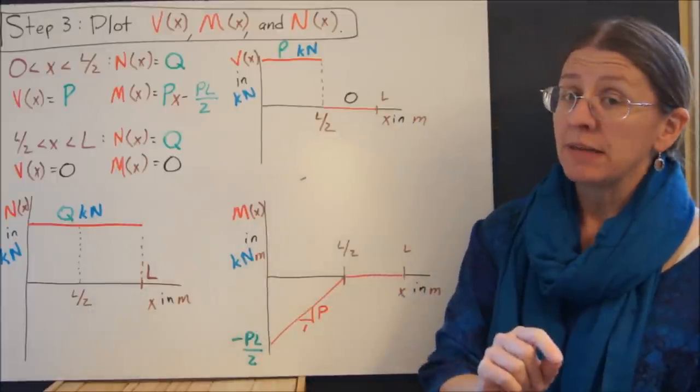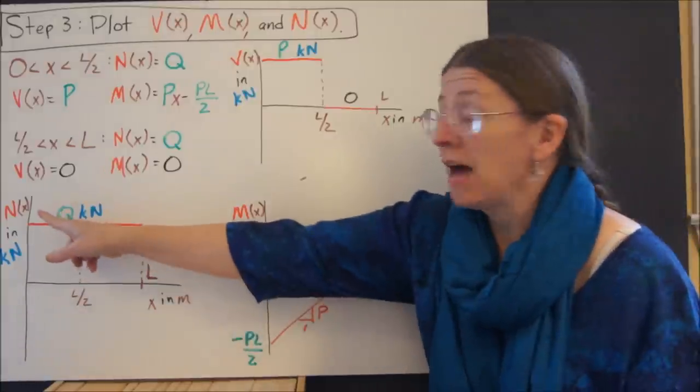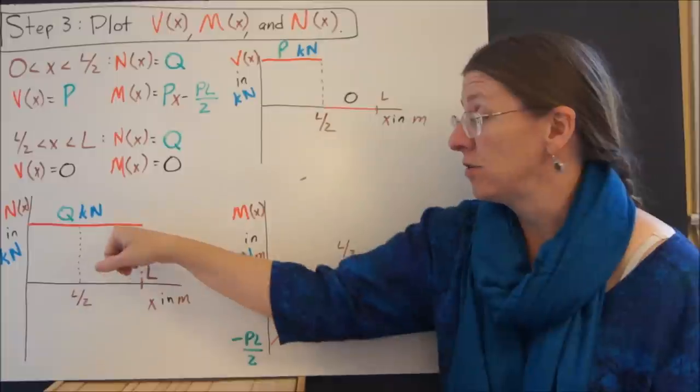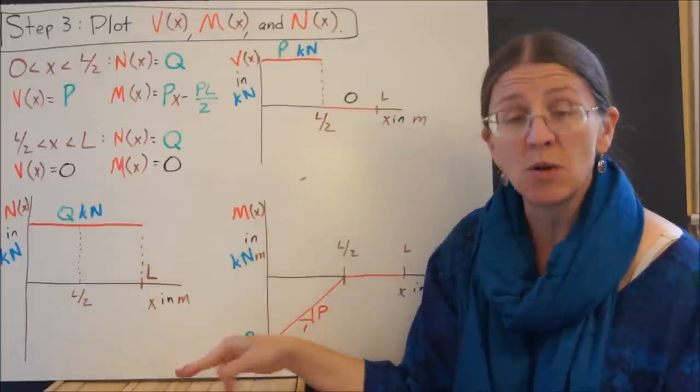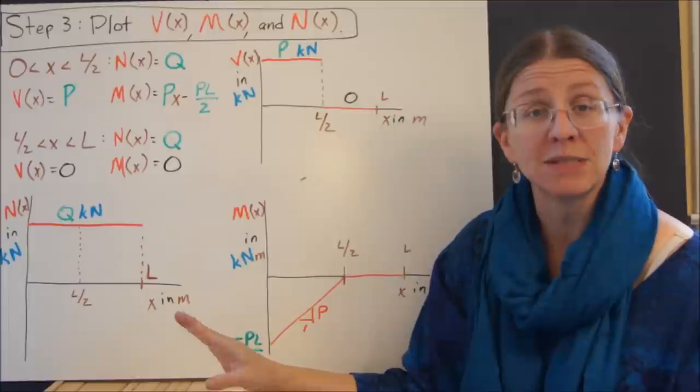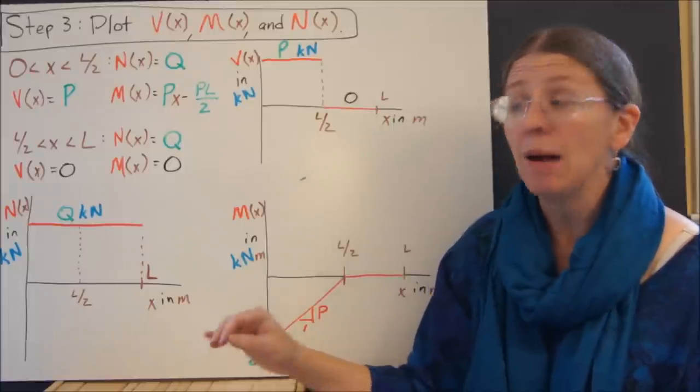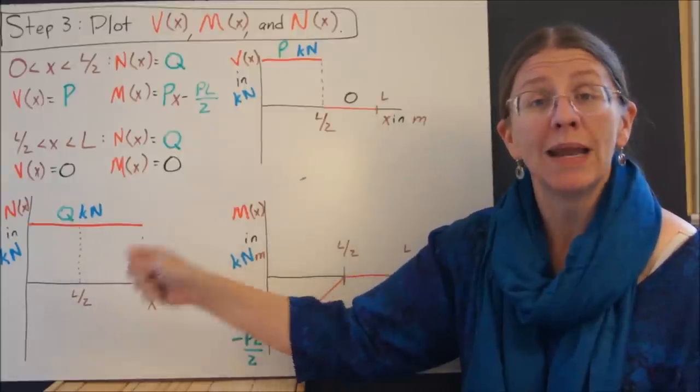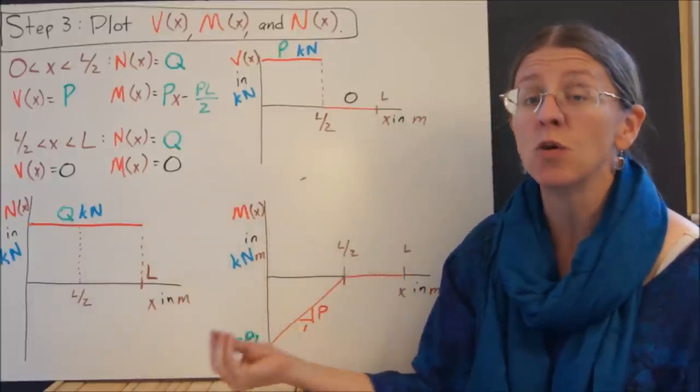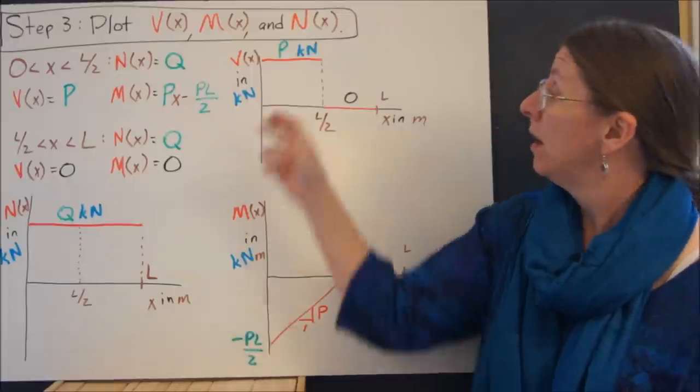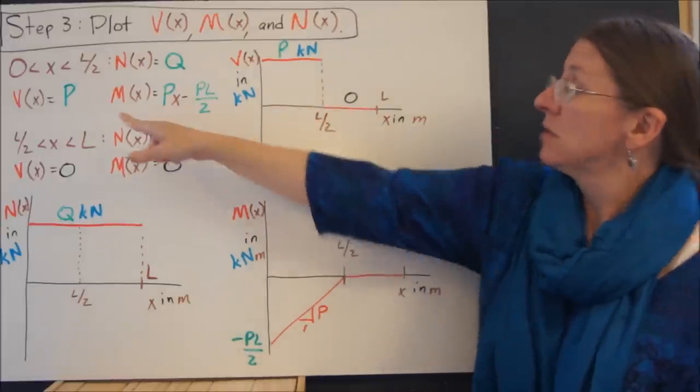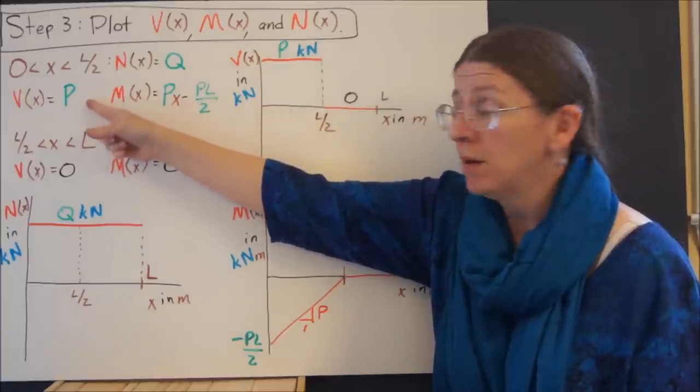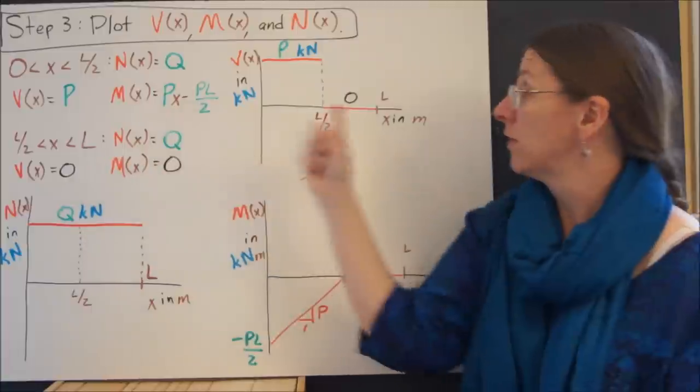A couple things about these plots: they need to be labeled, so it needs to have N and units in both places. Values need to be labeled and x values need to be labeled. I'm looking to see whether that value exceeds the maximum allowable at any point along the beam. The shear diagram started from zero at P for the first part of my beam, and then it went to zero for the second part.